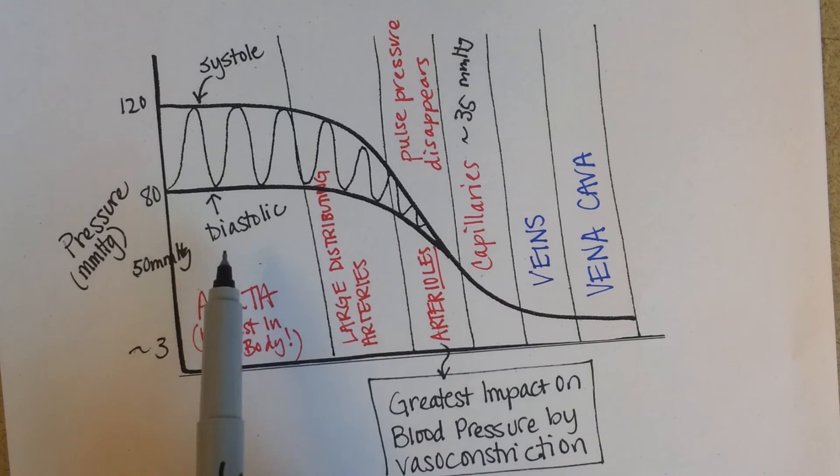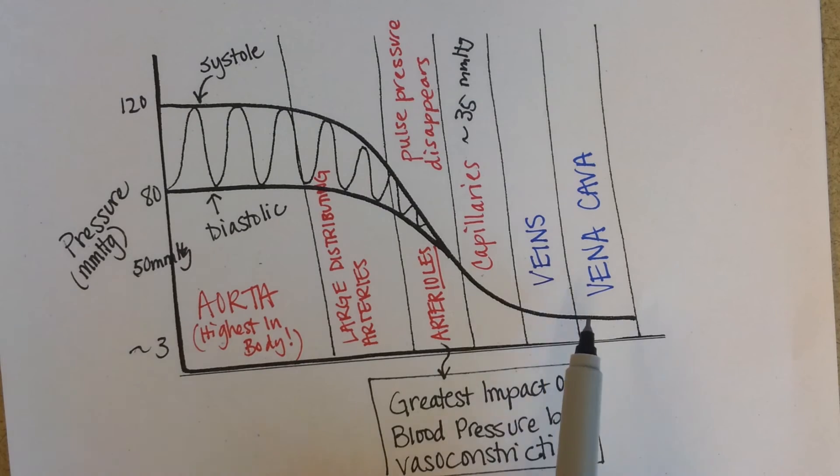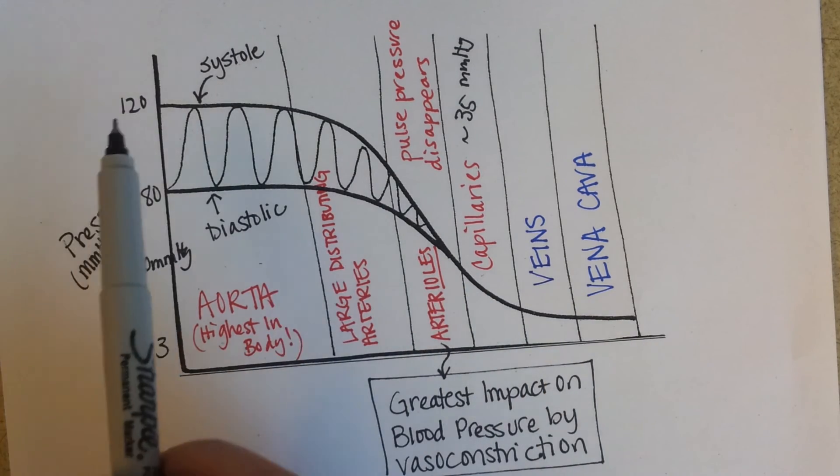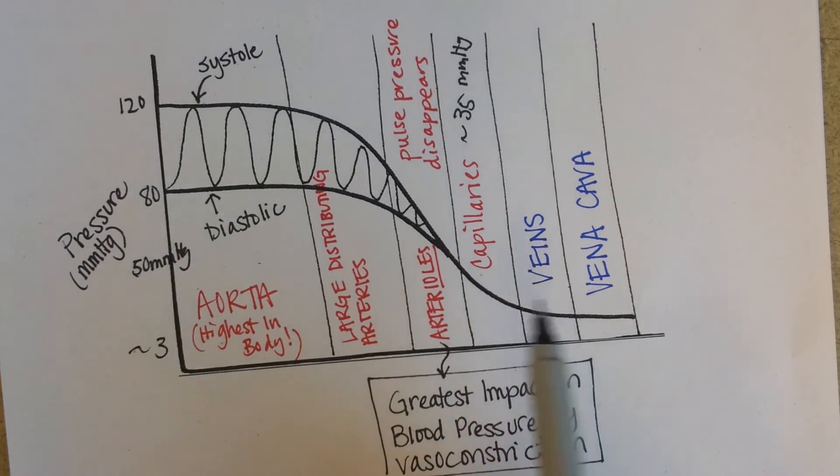So the aorta is the very closest to the heart. It has this great high blood pressure. And then by the time you get to the capillaries, blood pressure has gone down from, let's say, 120 to somewhere around 30. As it passes through, you can see it's dropping continually.